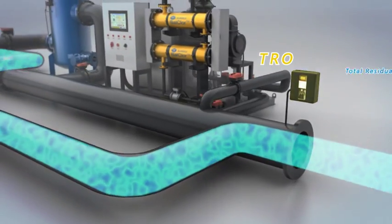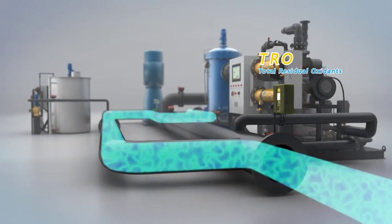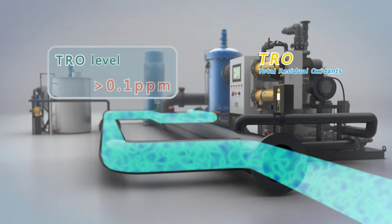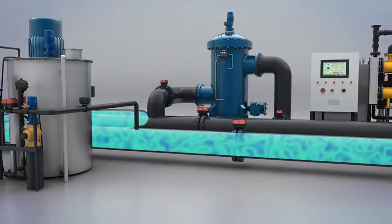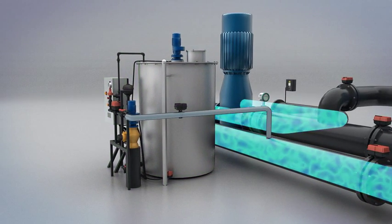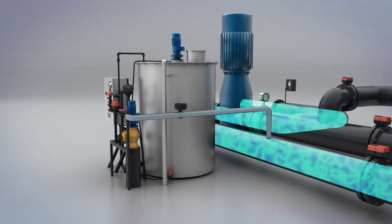TRO, total residual oxidant sensor installed at the outlet of deballasting pipe will closely measure the concentration level of active oxidant. If TRO level is higher than 0.1 ppm, neutralization unit will be operated automatically. The neutralizer will be injected into the deballasting pipe.